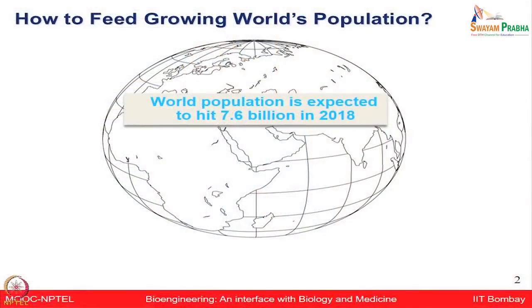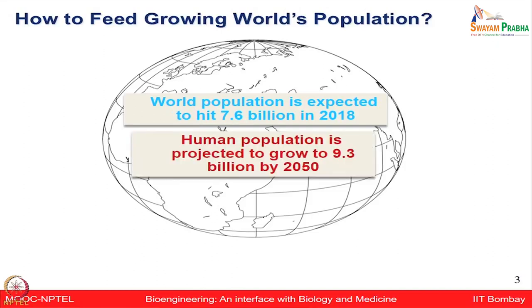First of all, how to feed the growing world population? World population is expected to hit almost 7.6 billion in 2018, and is projected to grow to 9.3 billion by 2050. How are we going to feed the growing world population when most of the arable land — the land where food crops are already being grown — is already under cultivation?